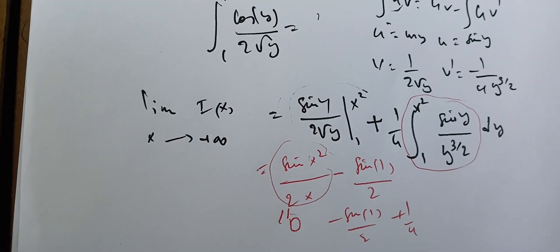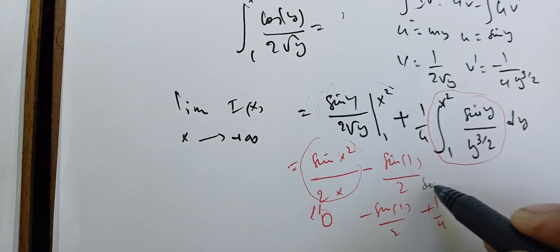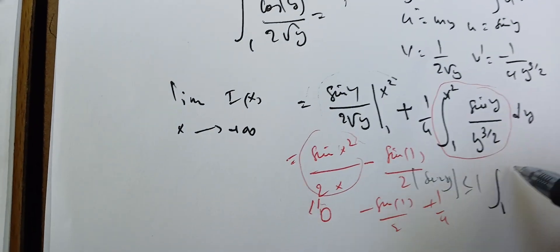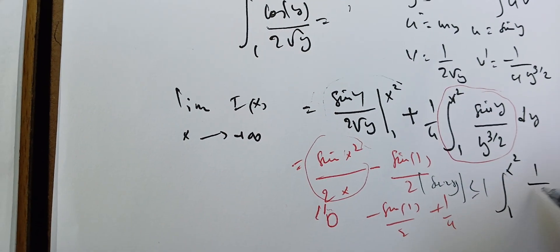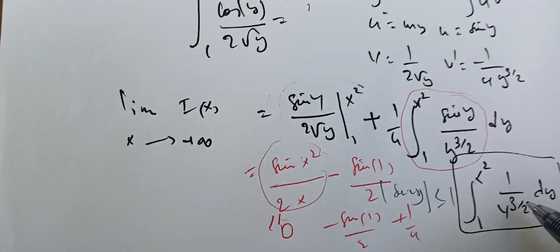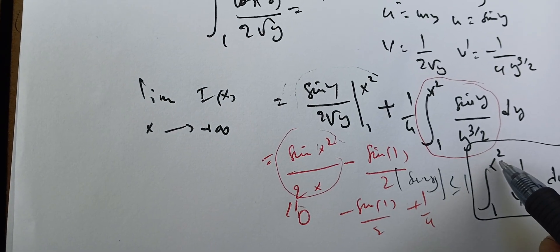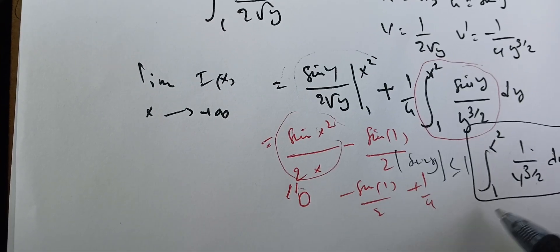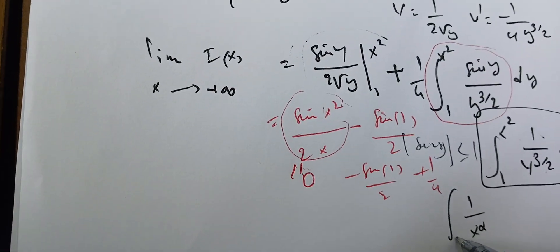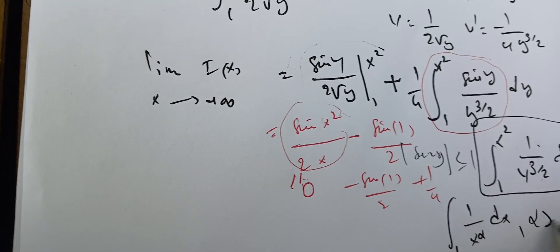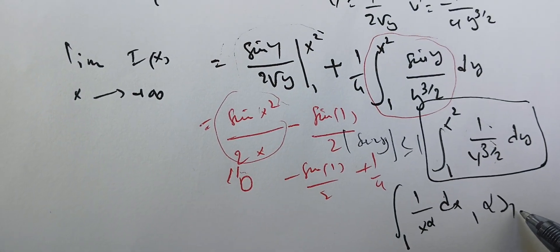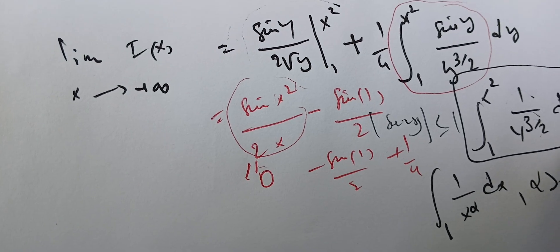For the remaining integral, since sine(y) is always less than or equal to 1, we can bound it by the integral from 1 to x squared of 1 over y^(3/2) dy. When we take x to infinity, we know this is convergent because it is of the form 1 over x^alpha with alpha = 3/2, which is bigger than 1, so this integral from 1 to infinity converges.